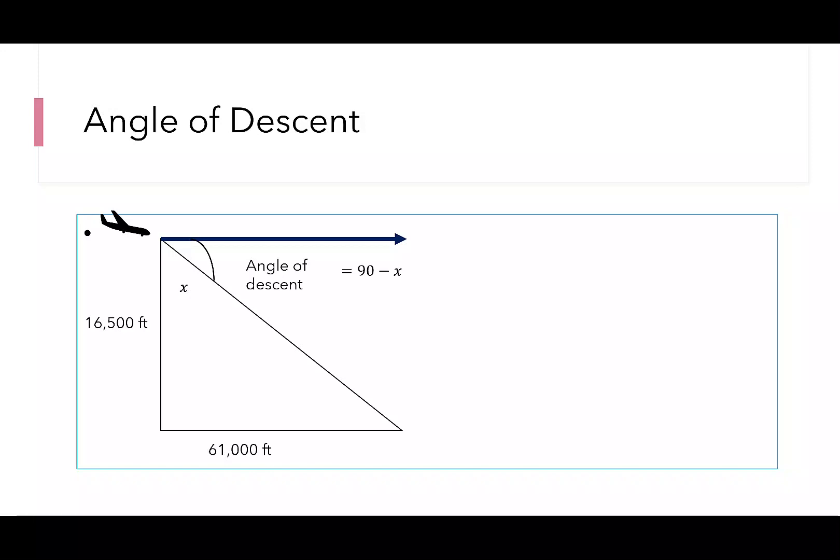Looking at the 61,000 feet being across from x tells me this is my opposite and then the 16,500 feet is the adjacent. Because I have the opposite and the adjacent, I will use tangent.